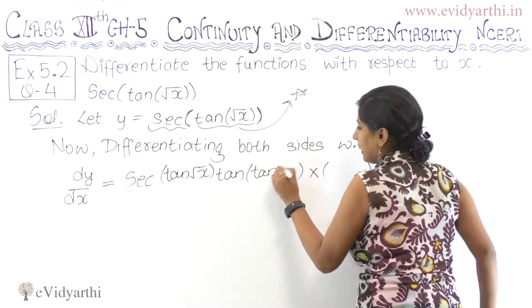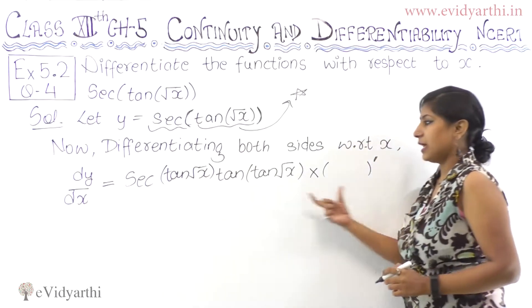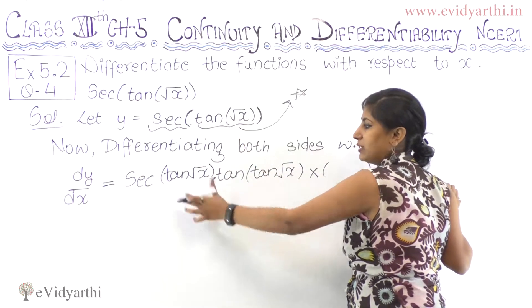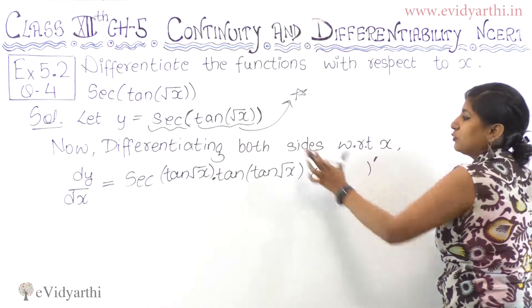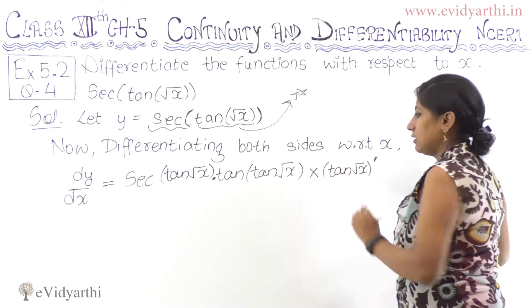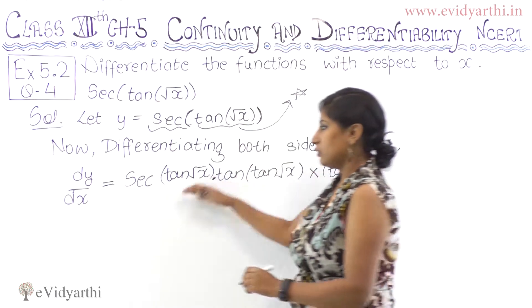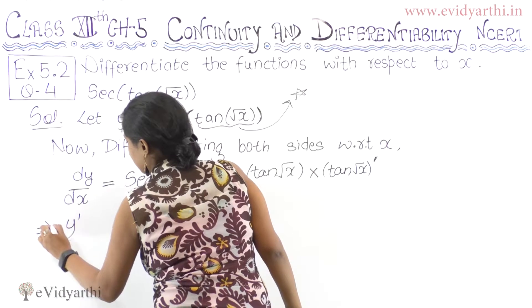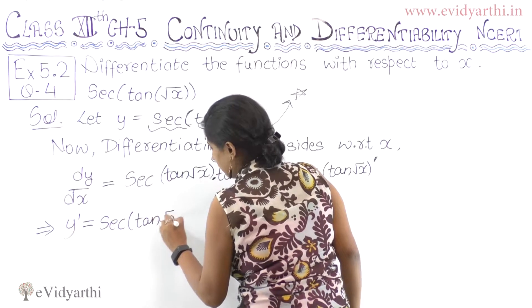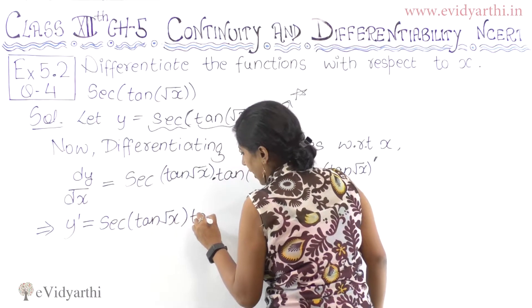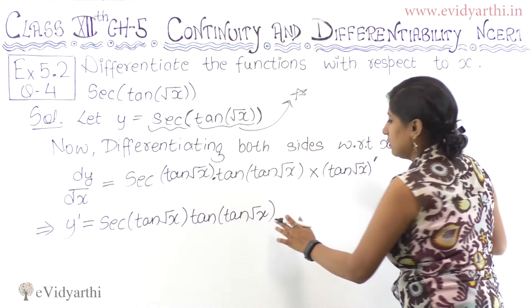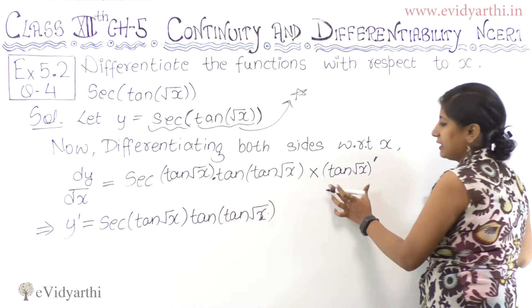Now tan comes inside tan — don't get confused. I am giving you brackets so you won't get confused. Here sec and tan take the same angle, so the same argument appears. Then separately the derivative of that inner part comes. So y dash equals sec of tan of root x, into tan of tan of root x. The inner tan(√x) stays the same — keep it as is.